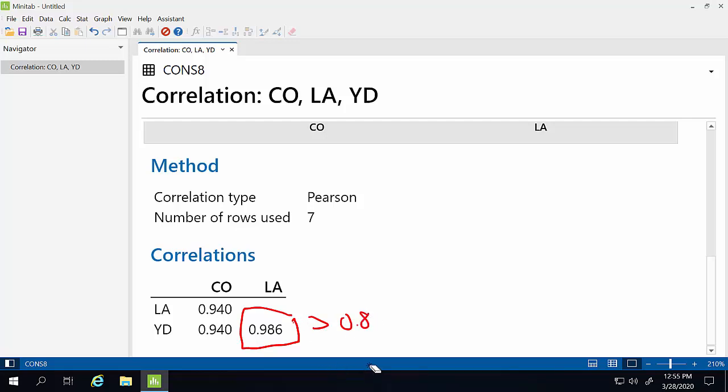That actually makes pretty good sense. Our liquid assets are probably a function of our disposable income. As we have more income, we are likely to have more liquid assets.